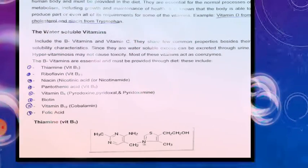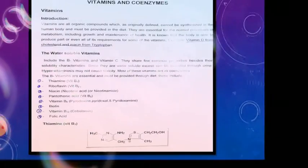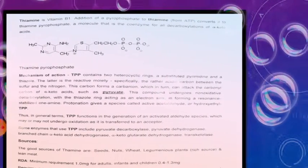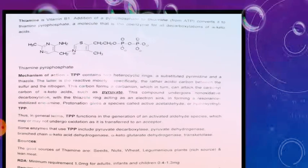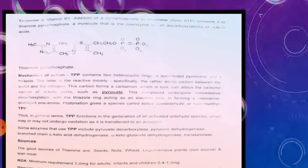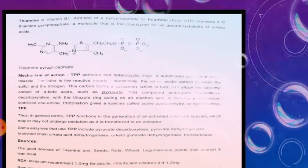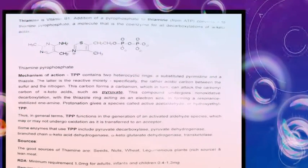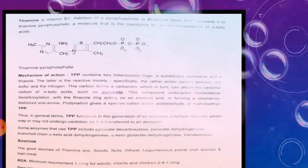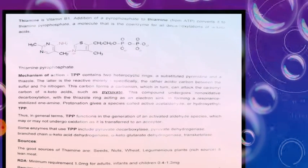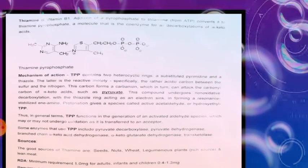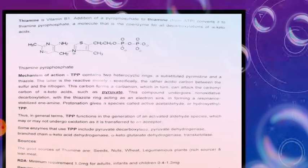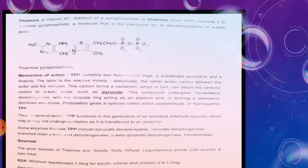This is the structure of thiamine, or vitamin B1. The addition of pyrophosphate to thiamine from ATP converts it into thiamine pyrophosphate (TPP). TPP is a coenzyme for the decarboxylation of alpha-keto acids — where the first carbon is the alpha carbon and a keto group is present, hence the name alpha-keto acids.